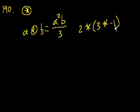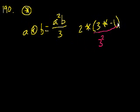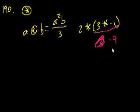So 3⊛(-1): that's equal to 3 squared times minus 1, which is minus 3 squared, or minus 9. So 9 times minus 1 is minus 9, divided by 3, which equals minus 3.